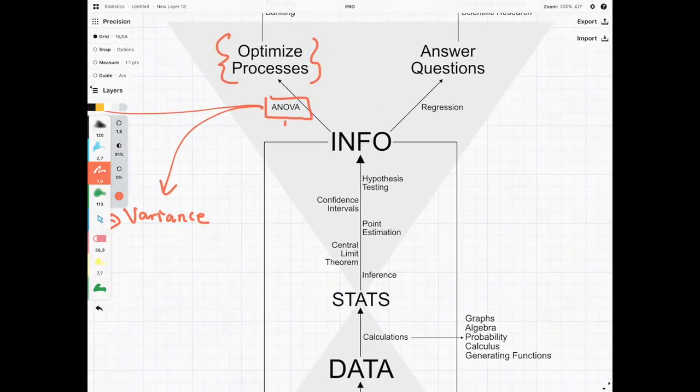ANOVA is an extension of some of the stuff we did in an earlier course. In earlier courses, we could compare two types of treatments.